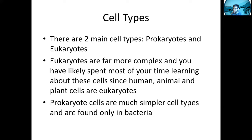There are two main cell types: prokaryotes and eukaryotes. Eukaryotes are far more complex, and you probably spent most of your studying in college and high school learning about eukaryotes, because they are more complicated and most of what we deal with in biology — humans, animals, plants — are all eukaryotes. Prokaryotic cells are much simpler and are found essentially only in bacteria and archaea. Many of you haven't really learned much about bacteria unless you've taken a microbiology course.